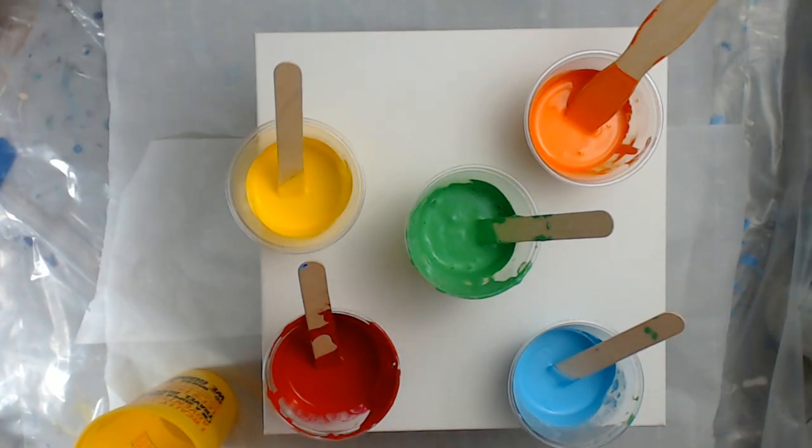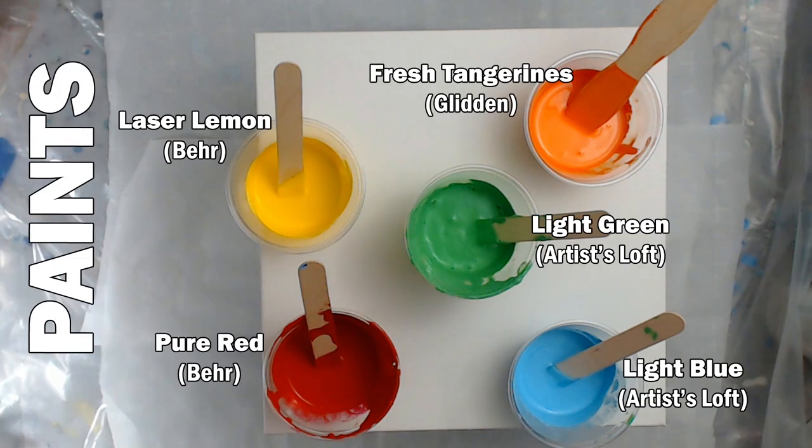Hi everyone, this is Sarah Fezzio and today I am going to do a pour with summer colors. I have fresh tangerines that is Golden Diamonds, I have laser lemon which is Valspar Premium Plus Ultra, I have light green by Artist's Loft, light blue by Artist's Loft, and I'm trying a red product now.